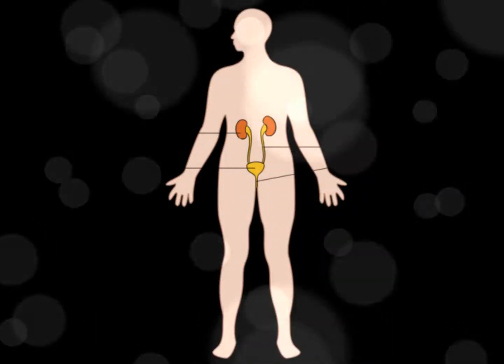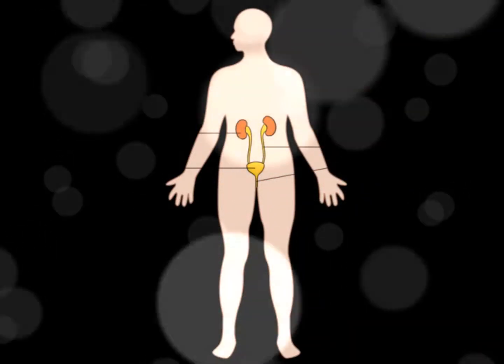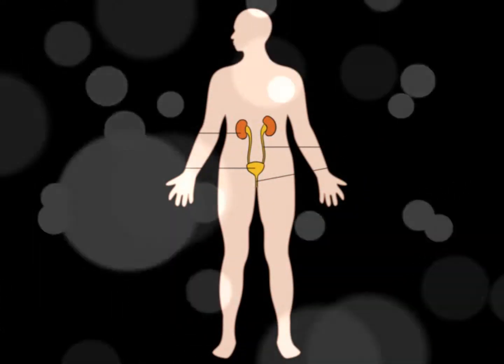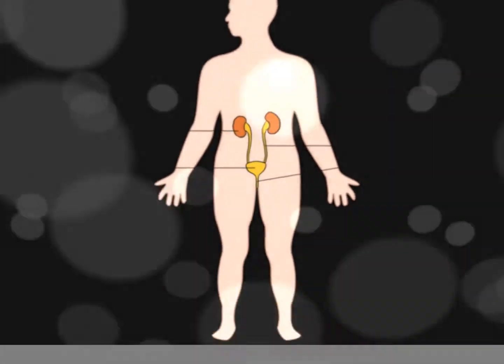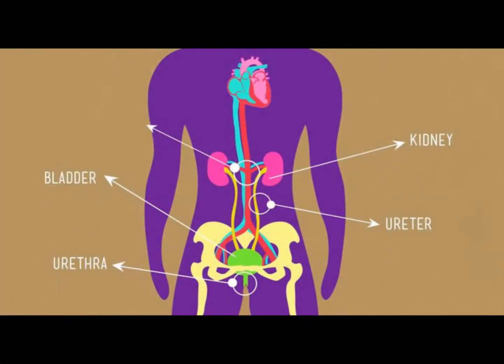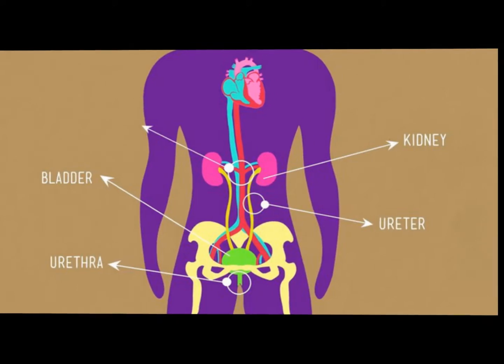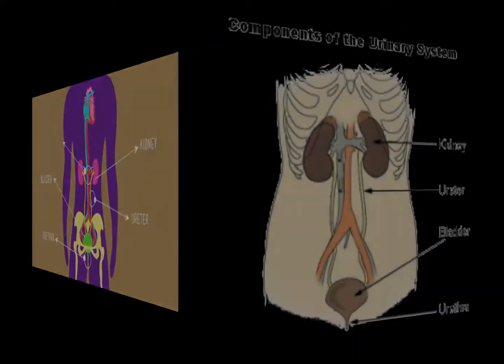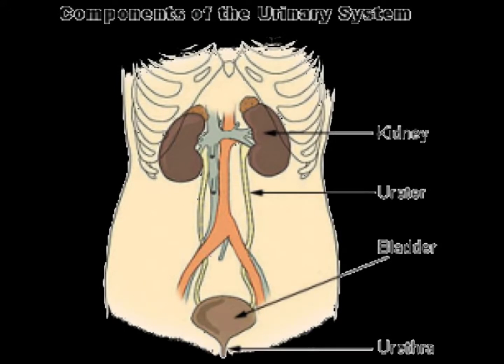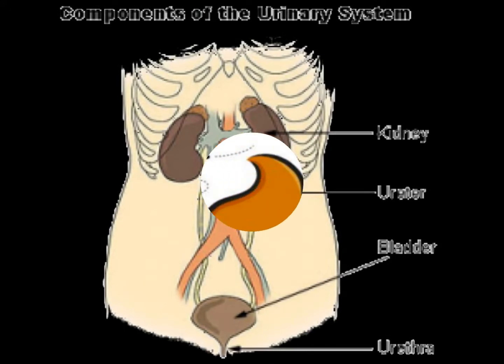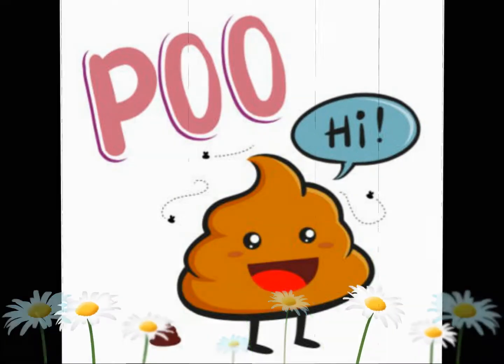The excretory system eliminates waste products or leftover material that your body can't use, such as poo or pee.